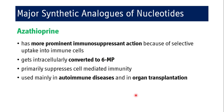Azathioprine is more prominently used as an immunosuppression drug rather than as an anti-cancer or anti-metabolite drug. It is intracellularly converted into 6-mercaptopurine and can be considered a prodrug of 6-mercaptopurine. It has selective uptake into immune cells and suppresses cell-mediated immunity. It is used mainly in autoimmune diseases and organ transplantation — to prevent graft rejection and to reduce the immune response, thereby minimizing symptomatology of autoimmune diseases.